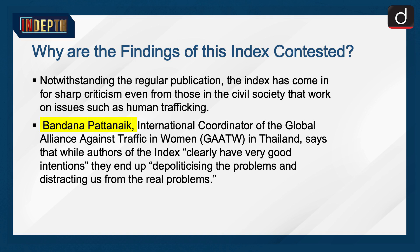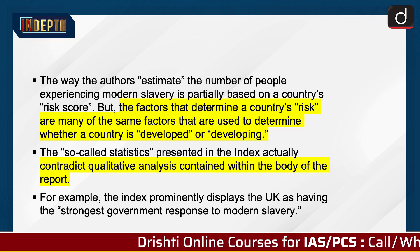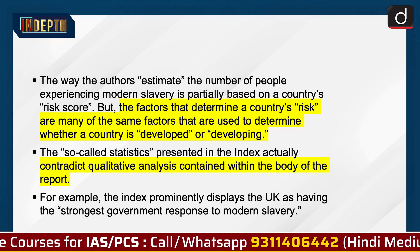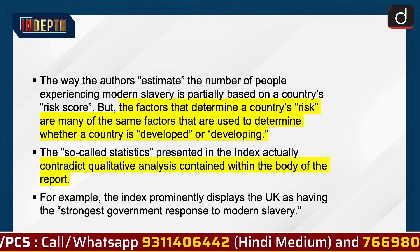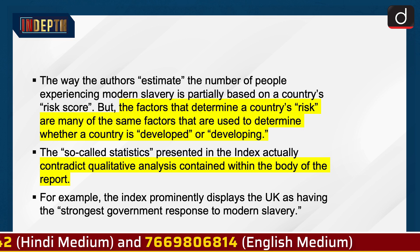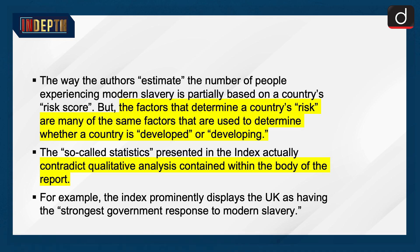Why are the findings of this index contested? Notwithstanding the regular publication, the index has come in for sharp criticism even from those in civil society working on issues such as human trafficking. Bandana Patanayak, international coordinator of the Global Alliance Against Traffic in Women in Thailand, says that while the authors clearly have very good intentions, they end up depoliticizing the problems and distracting us from the real problems. The way the authors estimate the number of people experiencing modern slavery is partially based on a country's risk score, but the factors that determine a country's risk are many of the same factors used to determine whether a country is developed or developing. The so-called statistics contradict the qualitative analysis contained within the body of the report — for example, the index prominently displays the UK as having the strongest government response to modern slavery.